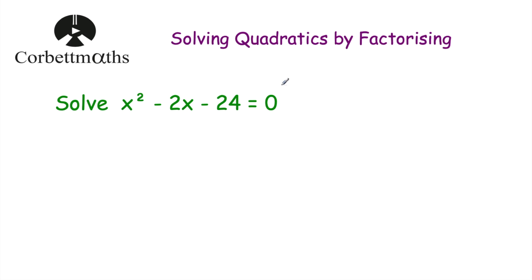This is on the GCSE Maths course so you should actually be able to solve quadratics by factorization already — this is a bit of a recap. So let's have a look at our first question: solve x² - 2x - 24 = 0. To solve a quadratic like this, ideally you want everything on one side and 0 on the other. We've got x² - 2x - 24 on one side and 0 on the other, so now we're going to try to factorize the left-hand side.